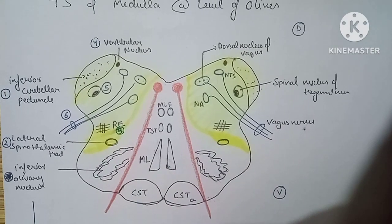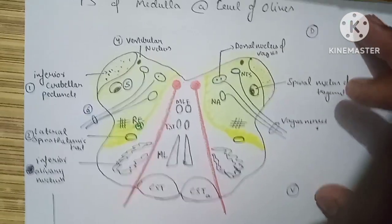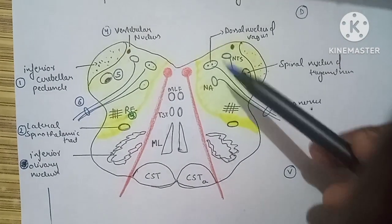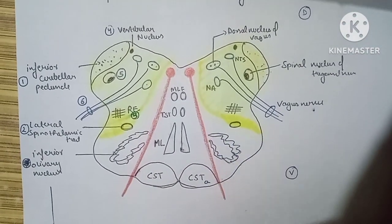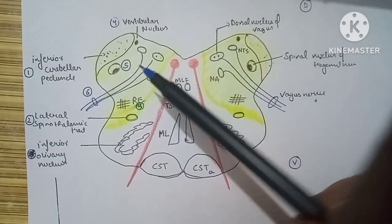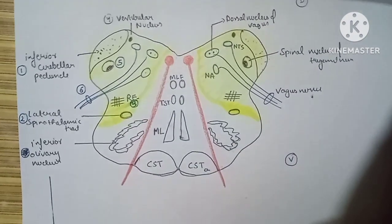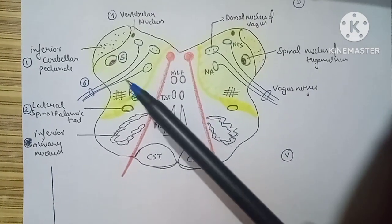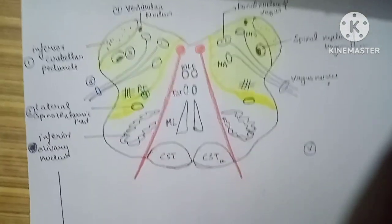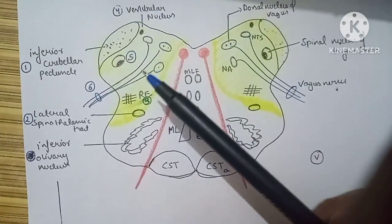This video is about understanding the medullary syndromes. We start by understanding the transverse section of the medulla at the level of the inferior olivary nucleus. There are lateral structures and paramedian or median structures, giving us two syndromes: the lateral medullary syndrome (Wallenberg syndrome) and the medial medullary syndrome. The more important one is the lateral medullary syndrome.